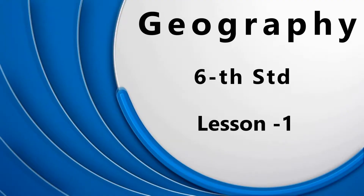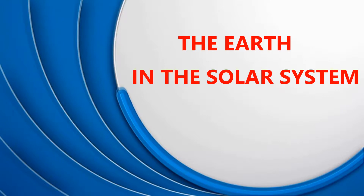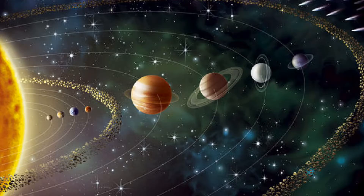Today we have the introductory class of geography, 6th standard. The first chapter focuses on the solar system and the place of Earth. The Sun, the Moon, and all those objects shining in the night sky are together called celestial bodies. The solar system is part of the universe that consists of celestial bodies like stars, planets, and satellites.